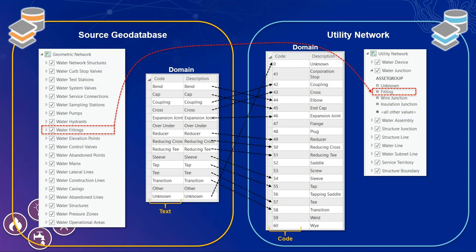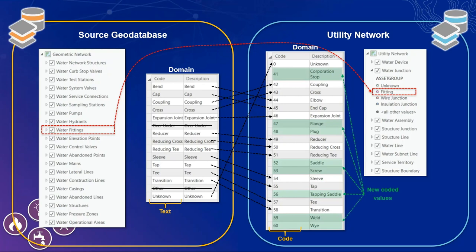The second way a target field can be populated is by lookup — using one or more source fields with a lookup table to translate values. My source data has a field called fitting type being mapped to asset type. Fitting type is a string in the source, but asset type in the target is an integer. Opening the fitting type worksheet, the coded value domain has been pre-populated; I manually specify what integer values match the source string values — bend to elbow, cap to end cap, coupling to coupling, and so forth. Some source values like over-under may not exist in the target — I can either add a new asset type or skip them. Similarly, target asset types without a match in the source can also be skipped.